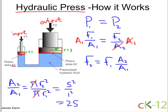So under these circumstances, for the numbers just given, we get that the output force F2 is equal to 25 times the input force F1. So you multiply your force by 25.